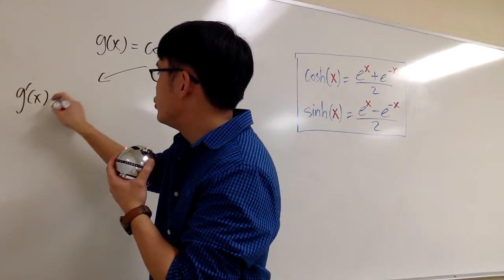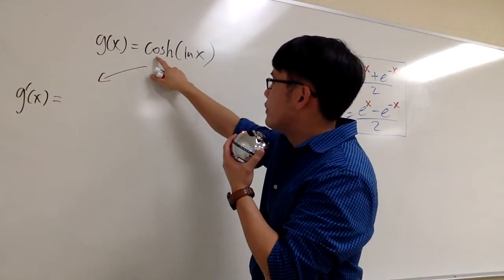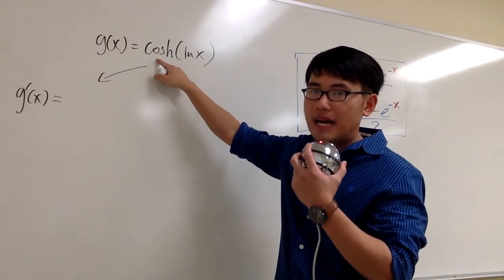We'll begin by saying, okay, g prime of x. We'll first ask ourselves, what's the derivative of cosh? And the answer is positive sinh.